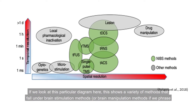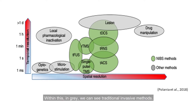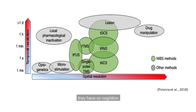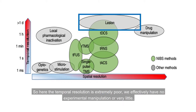This diagram shows a variety of brain stimulation or brain manipulation methods. In grey we can see traditional invasive methods, such as brain lesion studies or neuropsychological approaches, where we look at the effects of damaging parts of the brain on cognition. Brain lesions tend to be permanent, so the temporal resolution is extremely poor and we have very little experimental control over them.